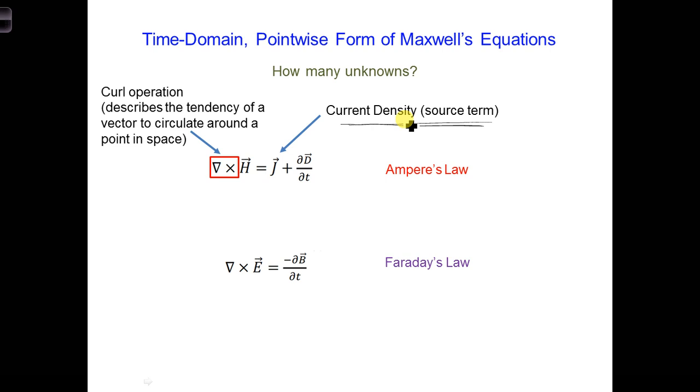meaning we have a non-zero value here on the right side of our equation, it will generate circulating H fields around that position. So that's what this equation means in words.